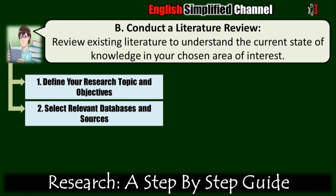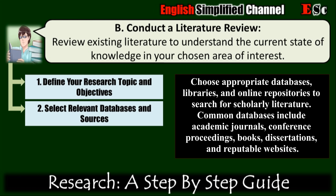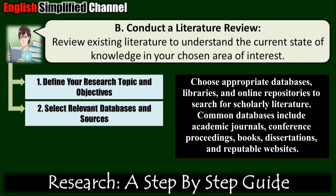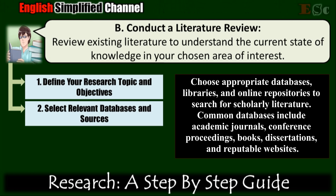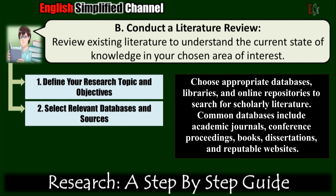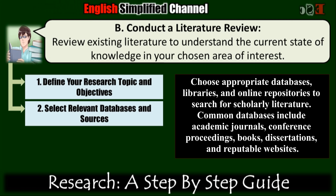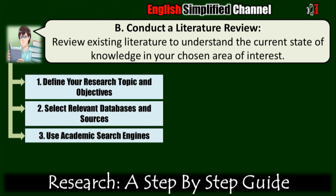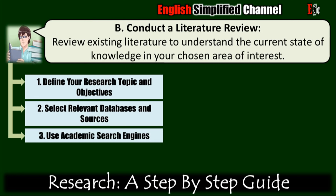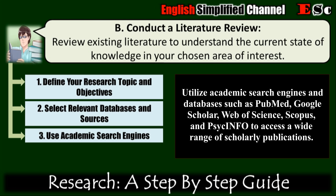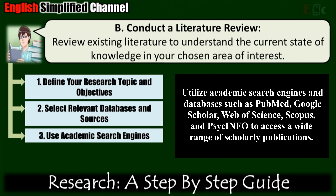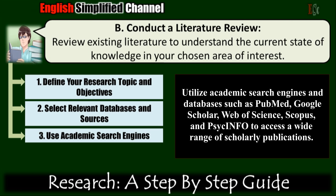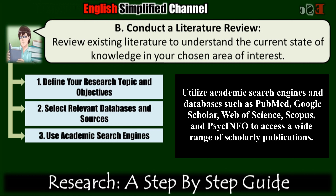Second, select relevant databases and sources. Choose appropriate databases, libraries, and online repositories to search for scholarly literature. Common databases include academic journals, conference proceedings, books, dissertations, and reputable websites. Third, use academic search engines such as PubMed, Google Scholar, Web of Science, Scopus, and PsycINFO to access a wide range of scholarly publications. These platforms allow you to search for articles, citations, and related research in your field.